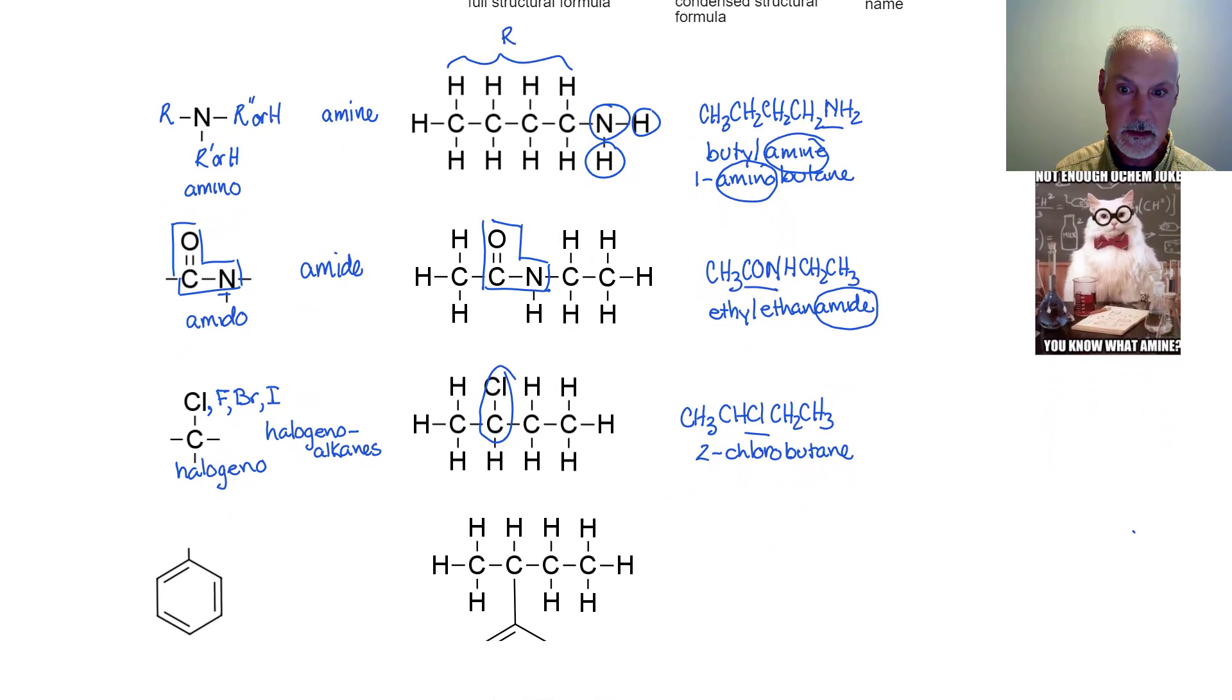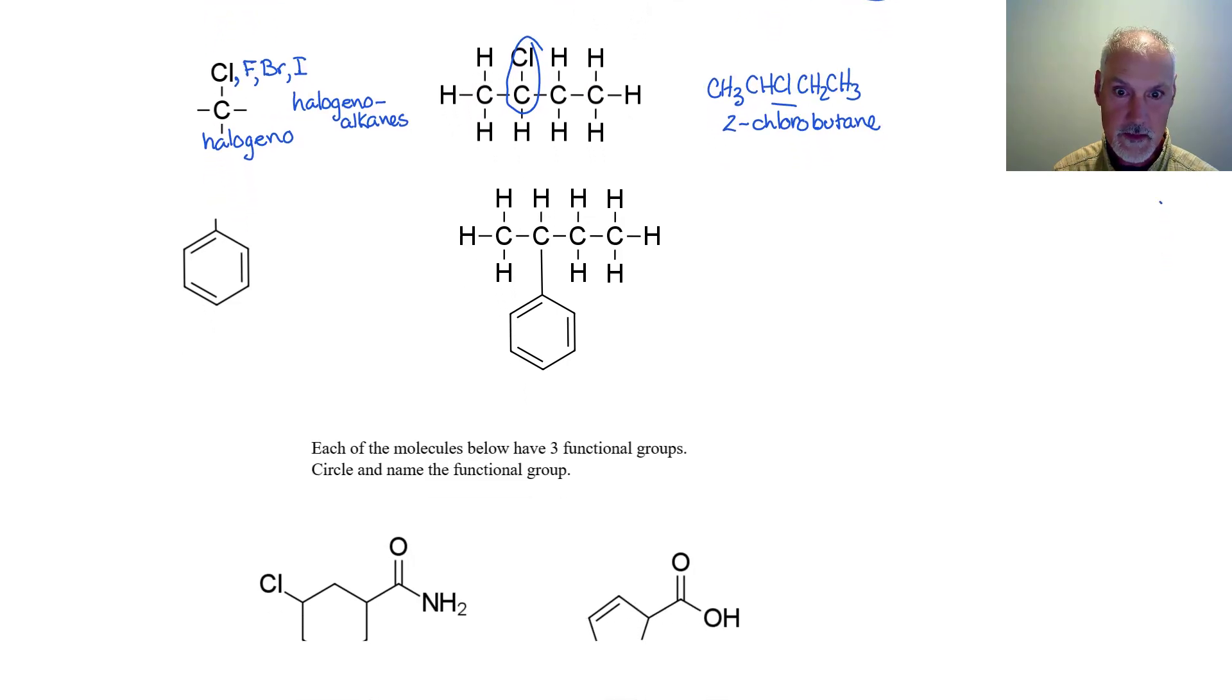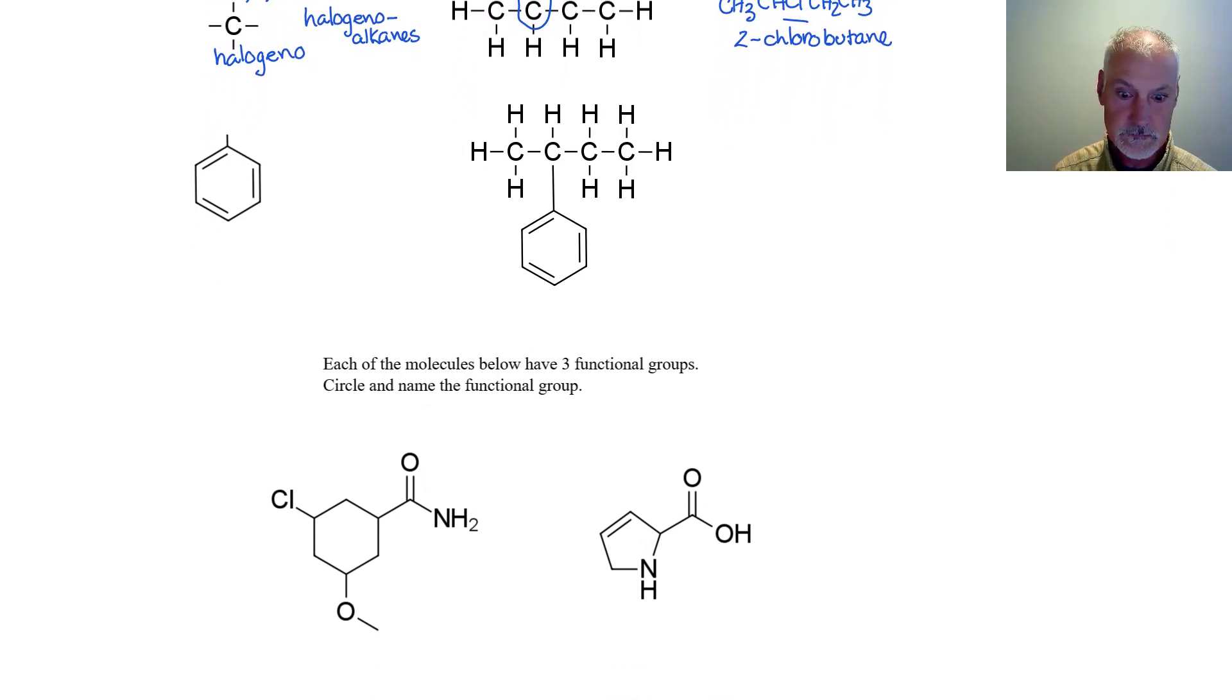Moving up to our final functional group. We have a carbon ring, the benzene ring, and this is called phenyl, and it's a member of the arenes. So here I can see the phenyl group attached to this chain of carbon. Now we don't need to worry about naming these particular compounds. We just need to be able to recognize the functional group phenyl and that its class is the arenes.